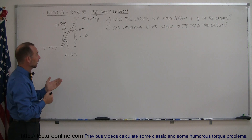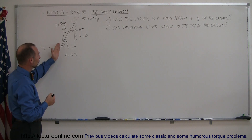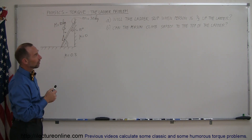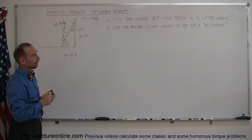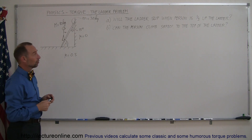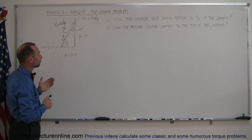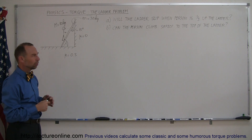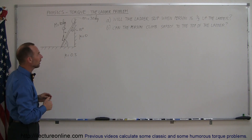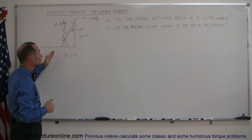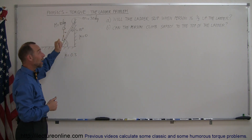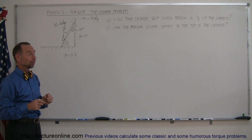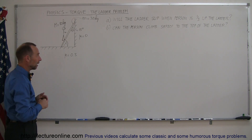So part A: when the person reaches one-third of the way up the ladder, will the ladder slip at that particular position? Secondly, if the answer is no — and I think it's no, but let's figure it out — can the person continue up and make it all the way to the very top of the ladder without the ladder sliding? And that is probably more in doubt.